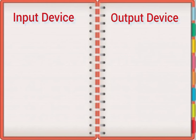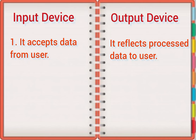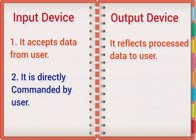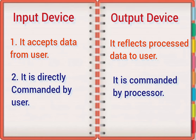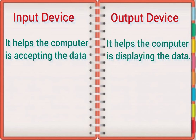Difference between input device and output device. First, an input device accepts data from the user. An output device reflects processed data to the user. An input device is directly commanded by the user. An output device is commanded by the processor. An input device helps the computer in accepting the data, while an output device helps the computer in displaying the data.